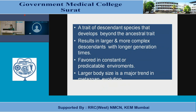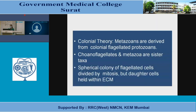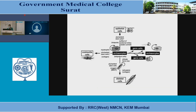Larger body size is a major trend in metazoan evolution. Regarding the origin of metazoa and the colonial theory: metazoans are derived from colonial flagellated protozoans. Choanoflagellates and metazoa share a spherical colony of flagellated cells divided by mitosis, with daughter cells held within an extracellular matrix. Cell types include archaeocytes, contractile cells, germ cells, skeletal cells, and epithelial cells.